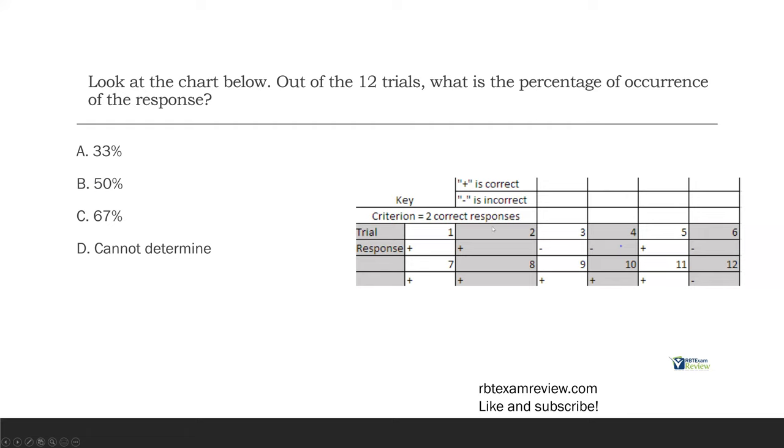So if we have all 12 trials, we're counting all 12 trials. If we want to find percentage of occurrence, we see that plus is correct and minus is incorrect. We need to count each individual response, find out how many times it happened out of 12. Well, 1 and 2, it happened, so we have 2. 5, it happened, we have 3. Then 7, 8, 9, 10, 11, it all happened, so we have a total of 8.